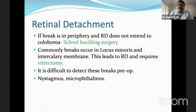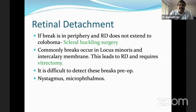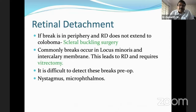If there is a break in the periphery, the retinal detachment does not extend completely around the coloboma, giving you a clue. However, it's very difficult to identify these breaks because patients have micro-ophthalmos and nystagmus. If you are able to identify a peripheral break, scleral buckling is an elegant technique for this condition. But most breaks occur at the locus minoris and intercalary membrane, requiring vitrectomy. One should not try scleral buckling in this condition because it will invariably fail.